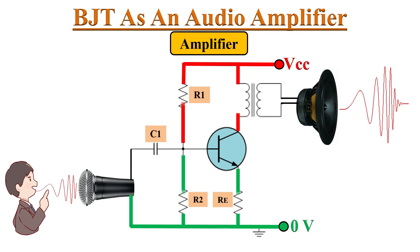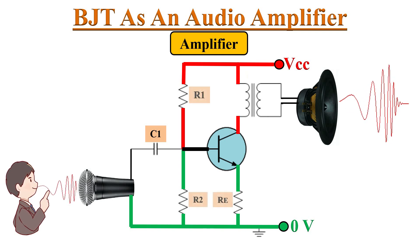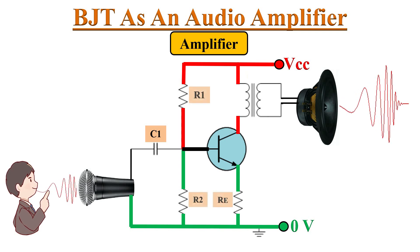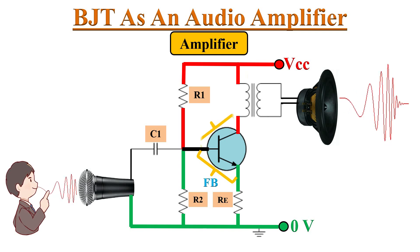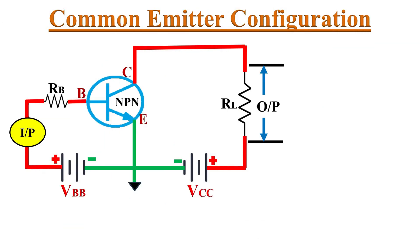For a transistor to act as an amplifier, it should be properly biased. These three biasing resistors are used to set a specific DC voltage to the transistor terminals, in order to maintain forward bias at the emitter-base junction and reverse bias at the base-collector junction. In the common emitter configuration of a BJT, it is biased in such a way that the base-emitter junction gets forward biased and the base-collector junction gets reverse biased.